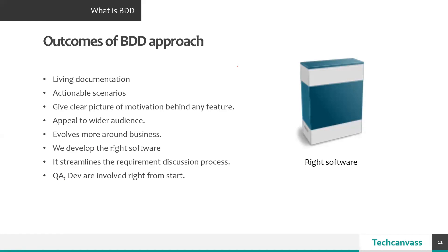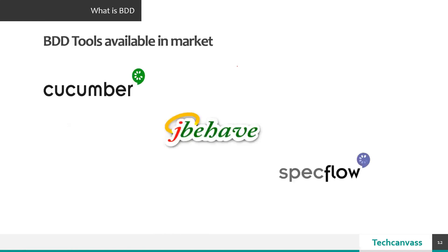Let's see the outcomes of the BDD approach. If we righteously follow BDD practice, the outcome is living documentation — executable and readable by a wider audience. The very important outcome is that we develop the right software, very close to the business needs, making stakeholders quite happy. QA, development and other teams are involved right from the start, so there is a lot of scope for brainstorming and innovation. In the market, different tools and frameworks are available for BDD implementation. Cucumber, JBehave, and SpecFlow are the ones widely used. We will talk about them in our next video.